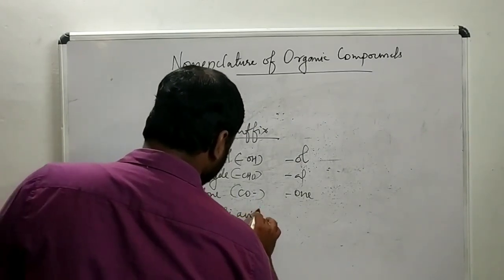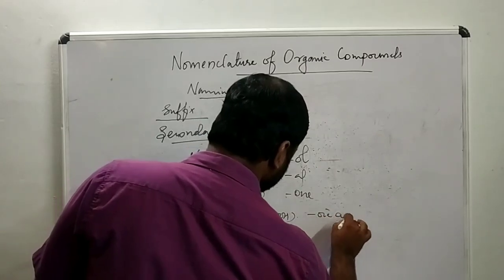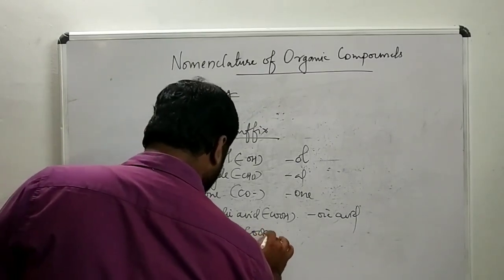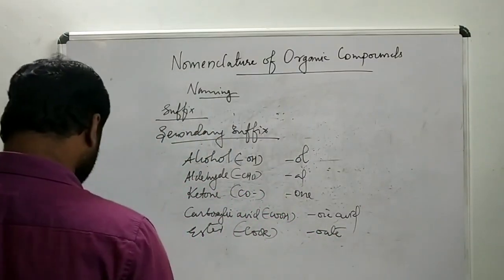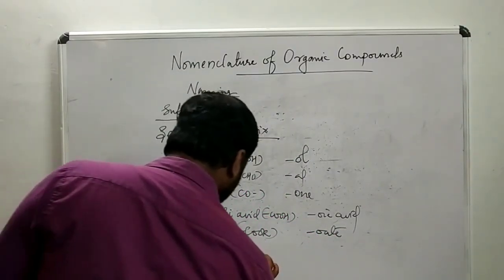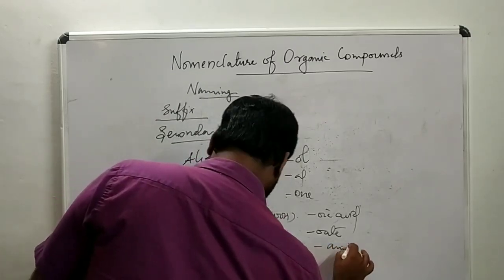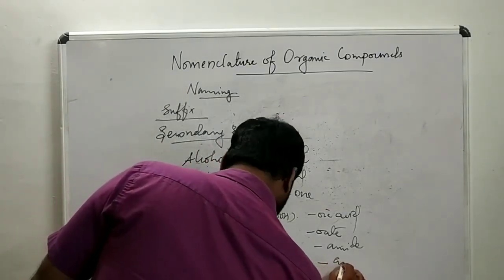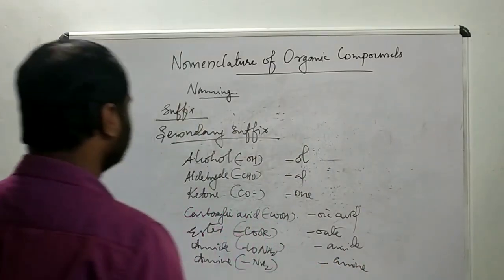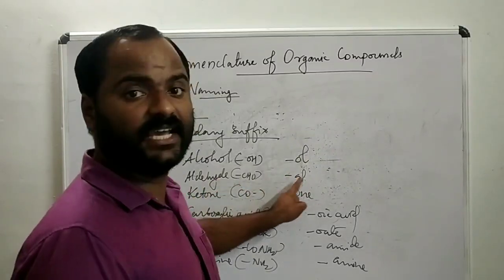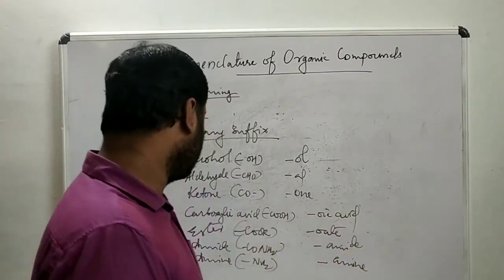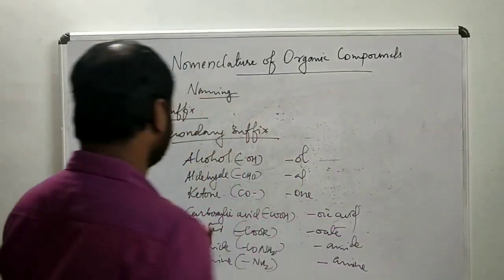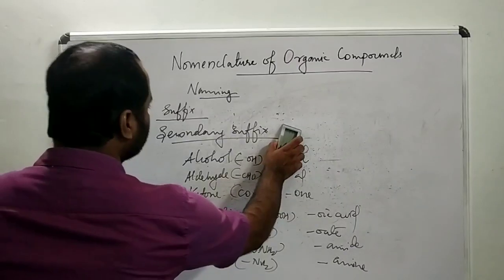For carboxylic acid, the group is COOH, and the suffix is OIC ACID. For ester, the group is COOR, and the suffix is OAT E. For amide, the group is CONH2, and it is also named amide. For amine, the group is NH2, and it is named AMINE. So to summarize: alcohol is OL, aldehyde is AL, ketone is ONE, carboxylic acid is OIC ACID, ester is OATE, amide is amide, and amine is amine. These are the secondary suffixes for the different functional groups.